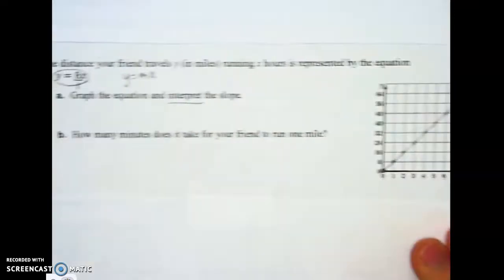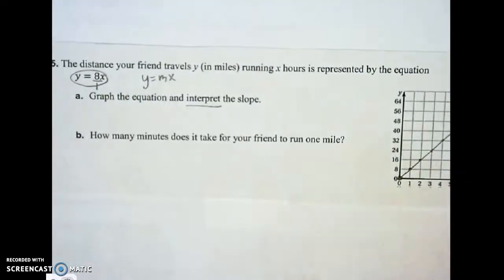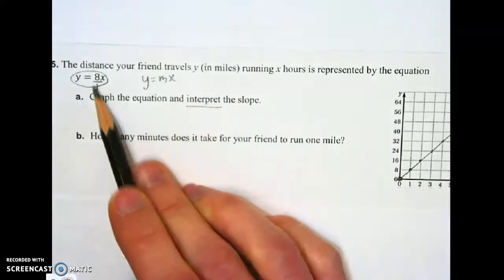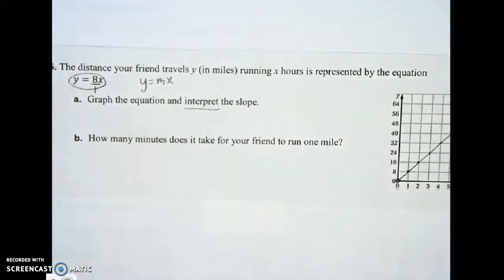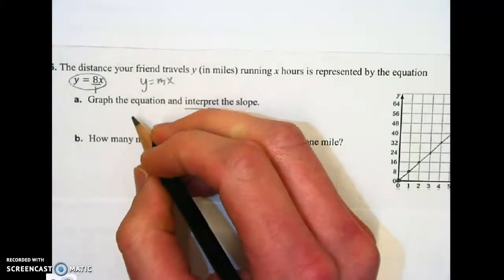Now I need to interpret that slope. What does 8 mean? I need to know what that means in real life. It doesn't mean 8 and 1, rise 8 and run 1. That's what you do to graph it. But it means 8 miles every hour.